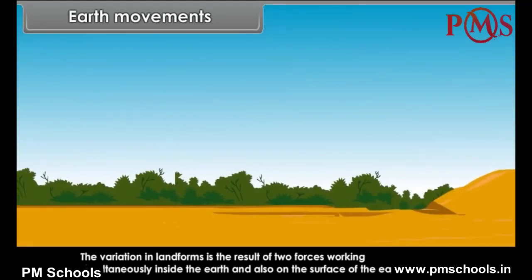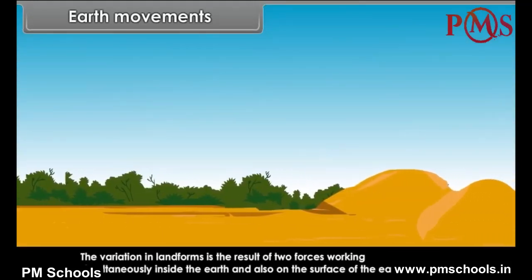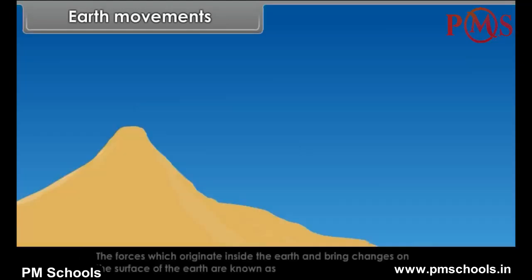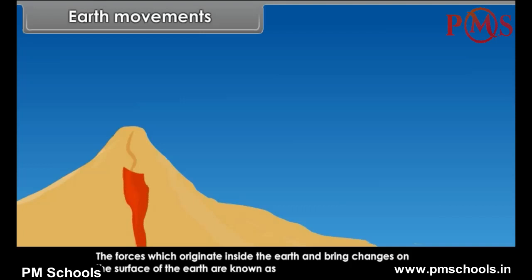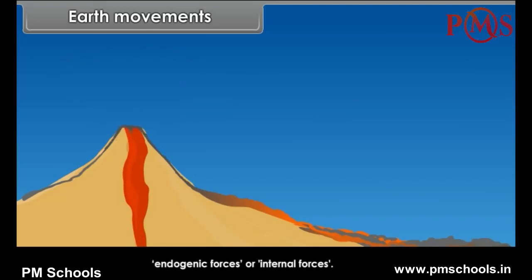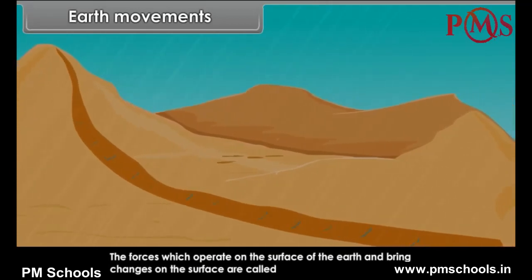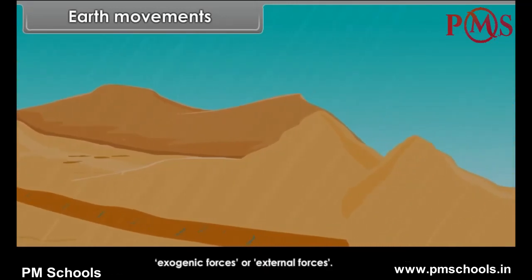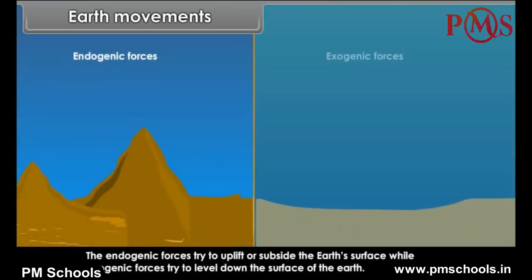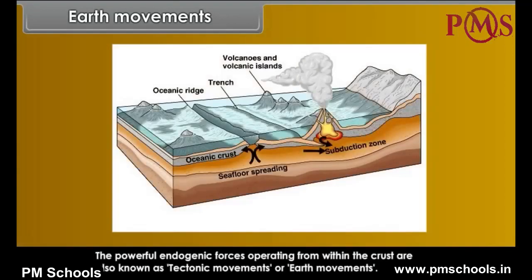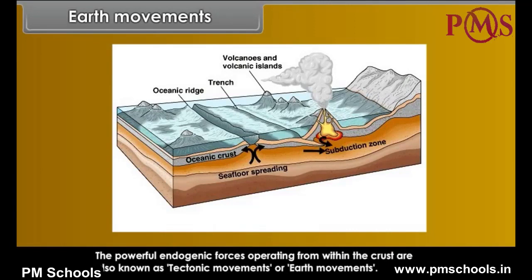The variation in landforms is the result of two forces working simultaneously inside the earth and also on the surface of the earth. The forces which originate inside the earth and bring changes on the surface are known as endogenic forces or internal forces. The forces which operate on the surface of the earth are called exogenic forces or external forces. The endogenic forces try to uplift or subside the earth's surface while exogenic forces try to level down the surface of the earth. The powerful endogenic forces operating from within the crust are also known as tectonic movements or earth movements.